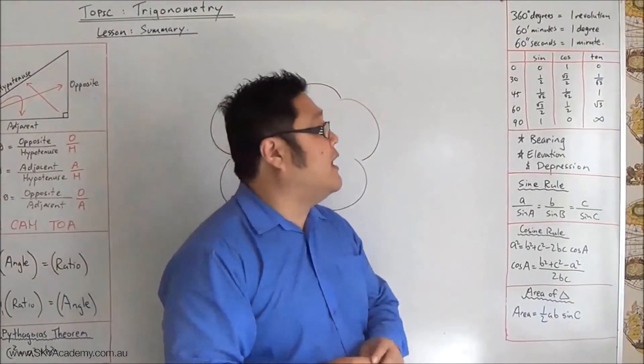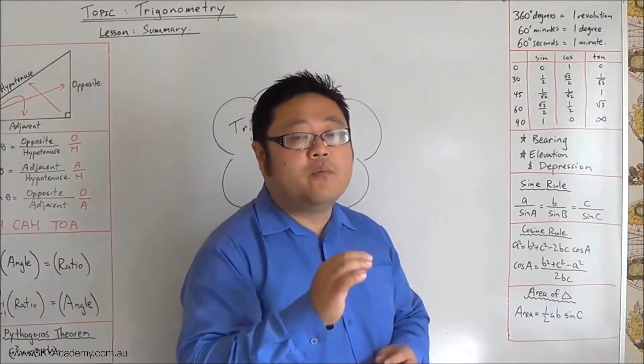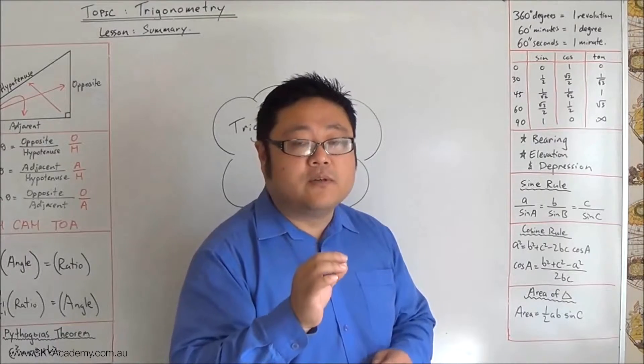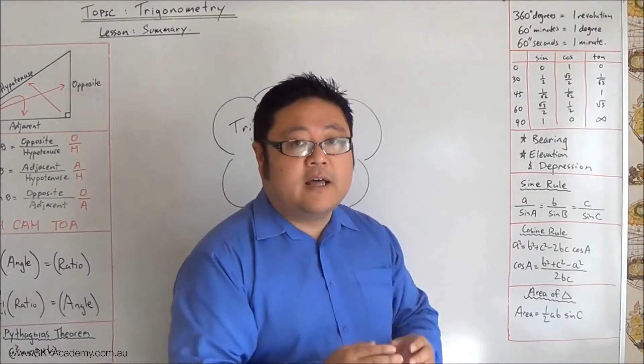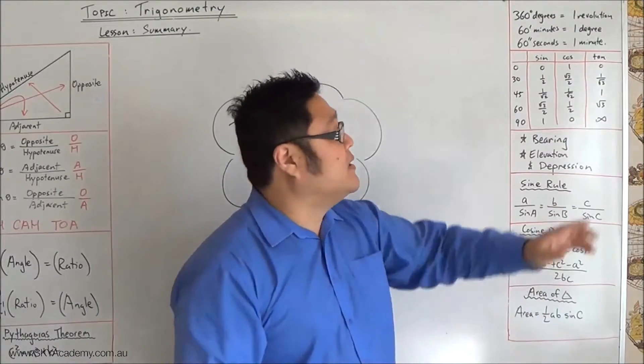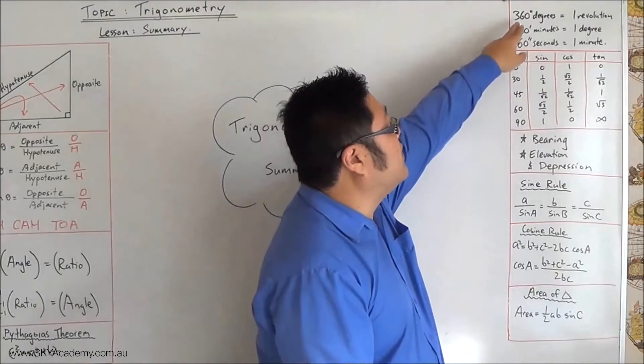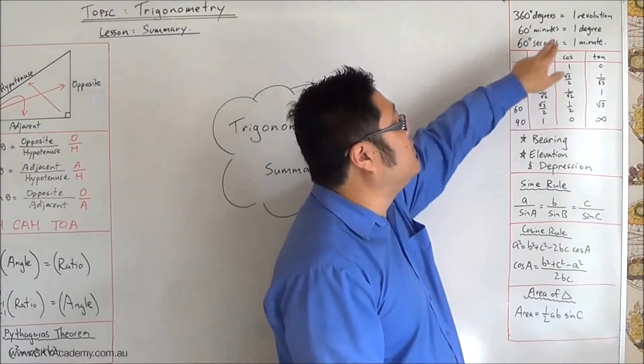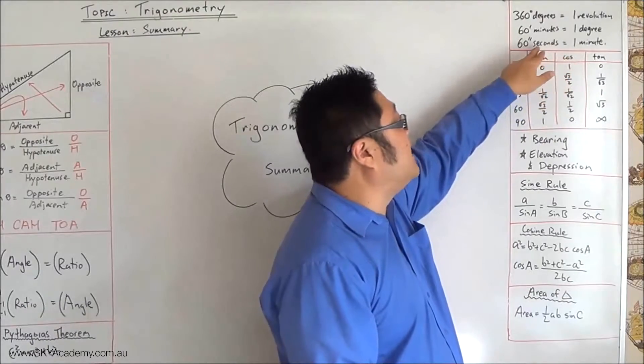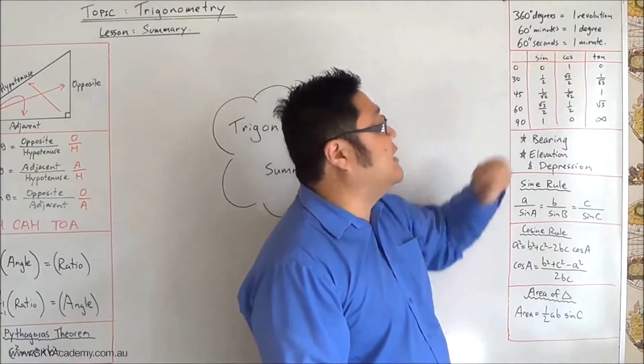And then we moved over here and basically looked at how to work out minute angles or angles that have really exact or precise measurements. And we worked out what a degree was, we worked out what a minute was, there's 60 minutes in a degree, we worked out what a second was, and there's 60 seconds in a minute.